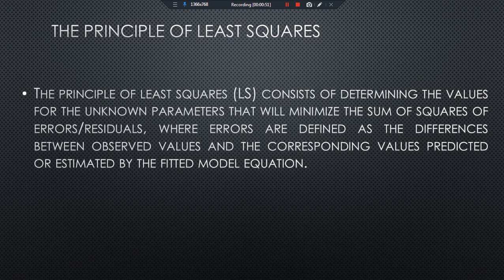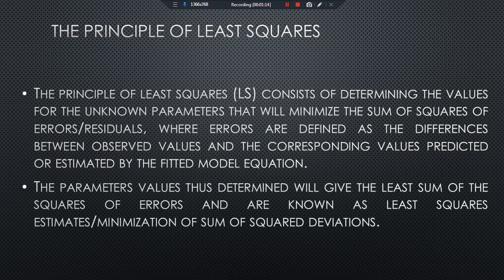The principle of least squares consists of determining the values for the unknown parameters that will minimize the sum of squares of errors or residuals, where errors are defined as the difference between the observed value and the corresponding value predicted or estimated by the fitted model equation. The parameter values determined will give us the least sum of squares of errors, and are known as the least squares estimates, or minimization of the square of deviation.